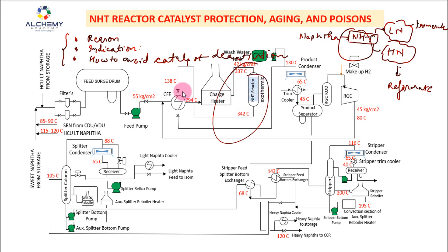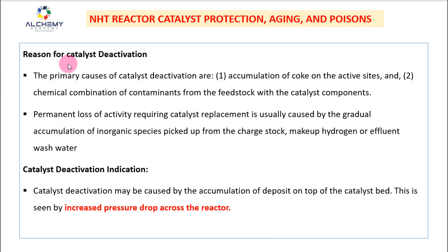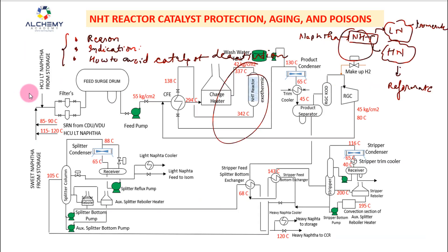Over time, when you are processing the liquid feed, your catalyst will age and eventually deactivate. The primary causes of catalyst deactivation in the NHT reactor are: first, accumulation of coke on the active sites; and second, chemical combination of contaminants from the feedstock with the catalyst components. Contaminants come from the liquid feed system — from SU light naphtha, RS, RM, CD, VD units, or from storage.